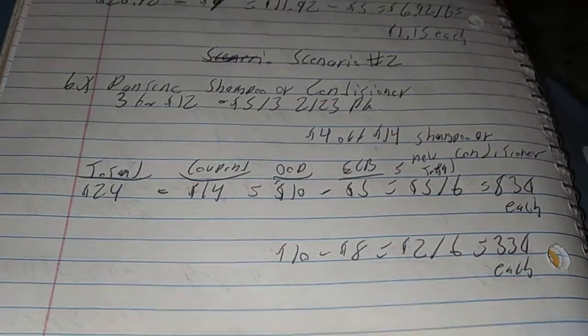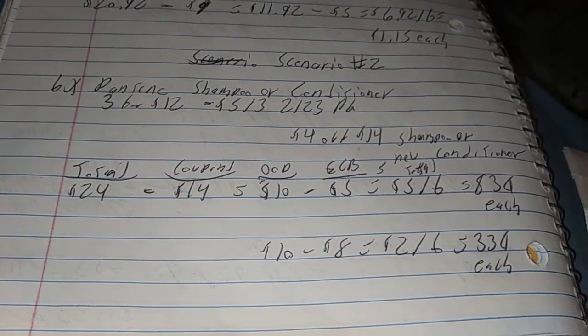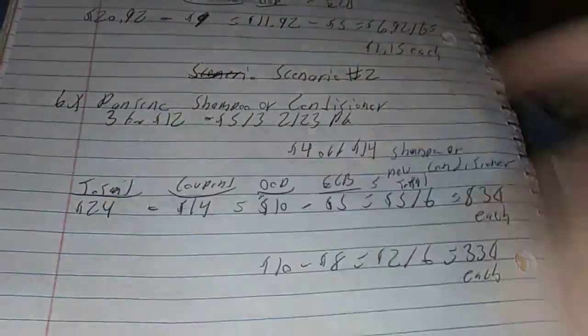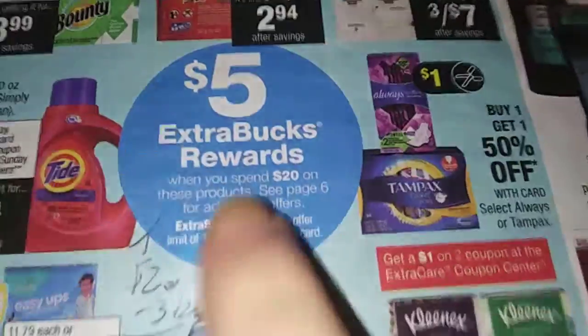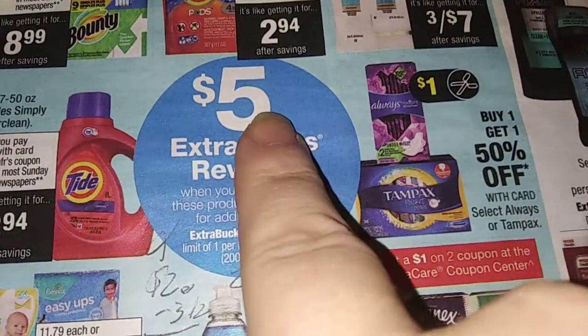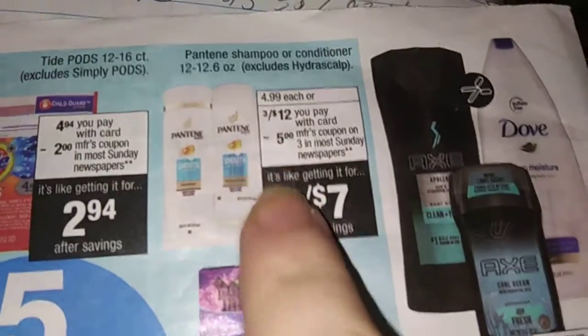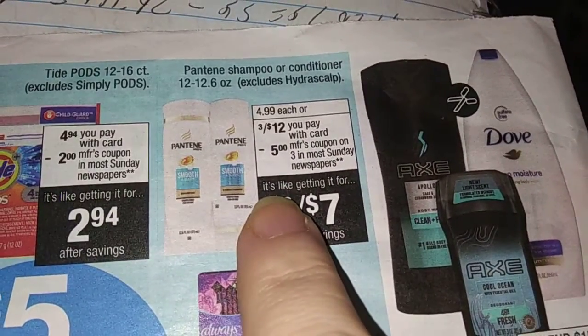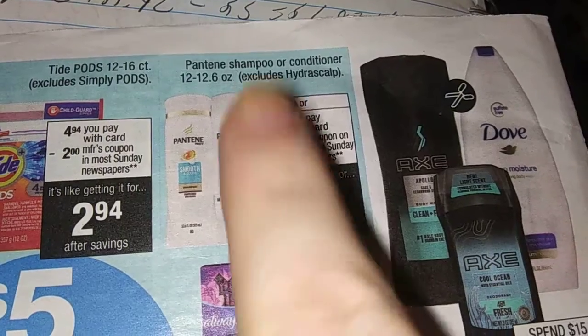This is TN Coupon welcoming you to scenario number two. Here's the thing: spend $20, get $5 back in ECBs. We're getting six of these, doesn't matter what combination - three and three, four and two, five and one, six or zero, I don't care. Six of these.